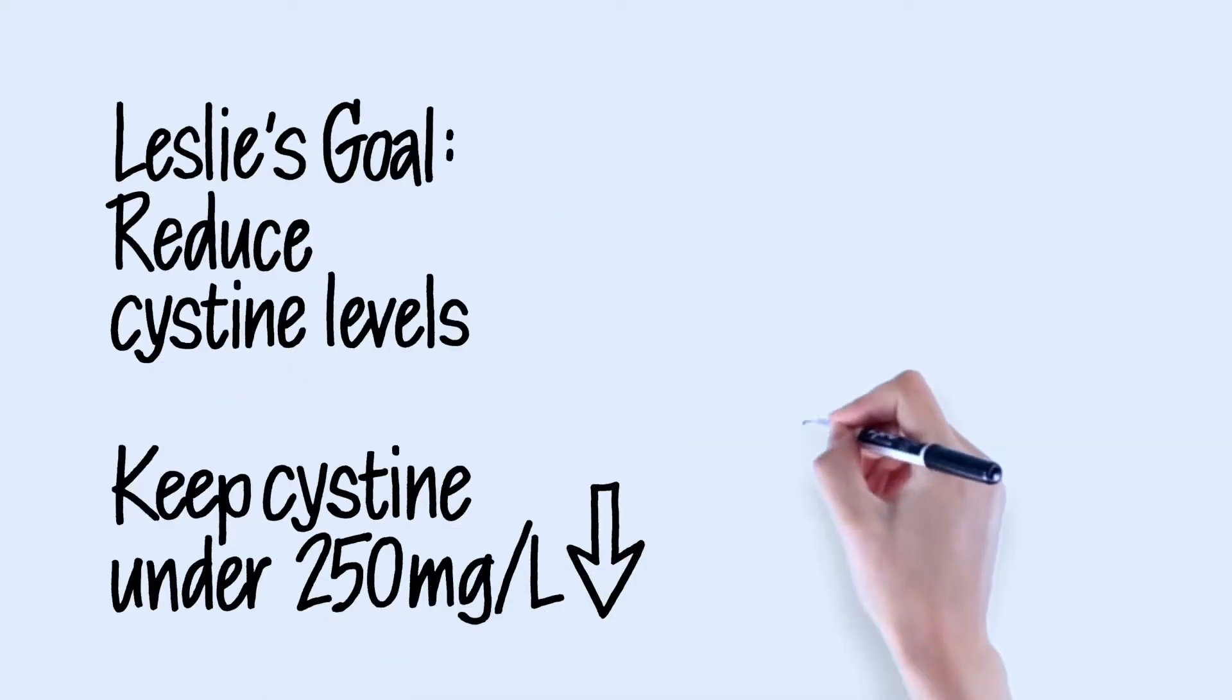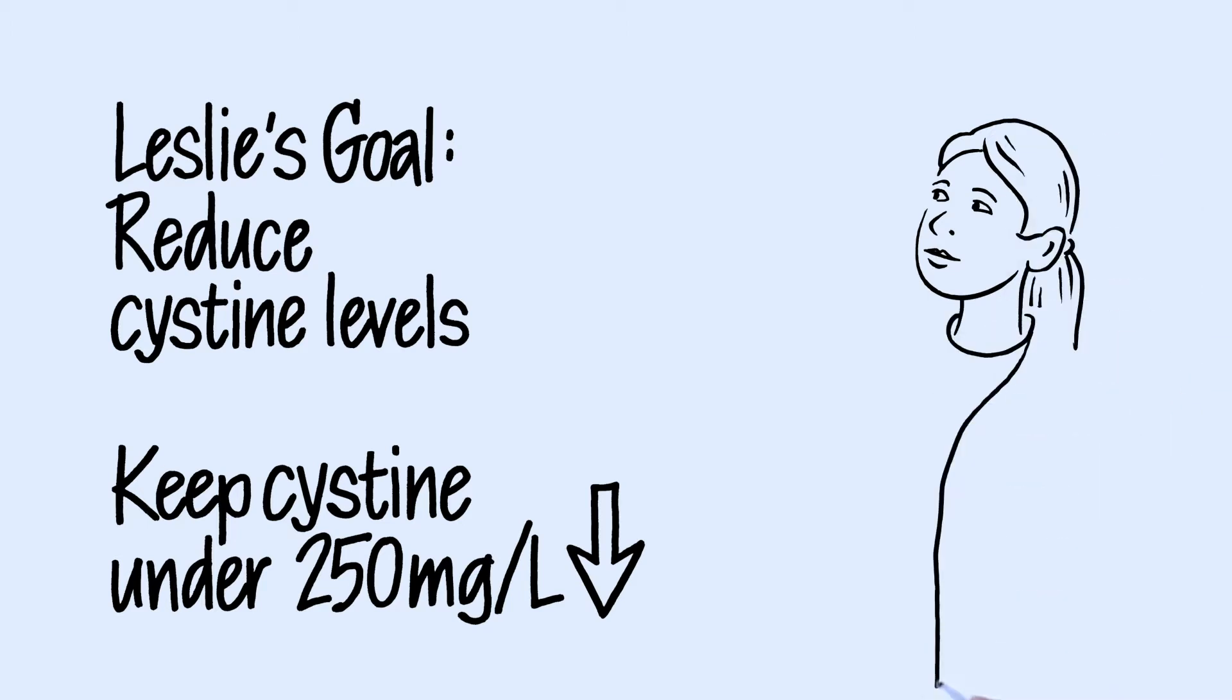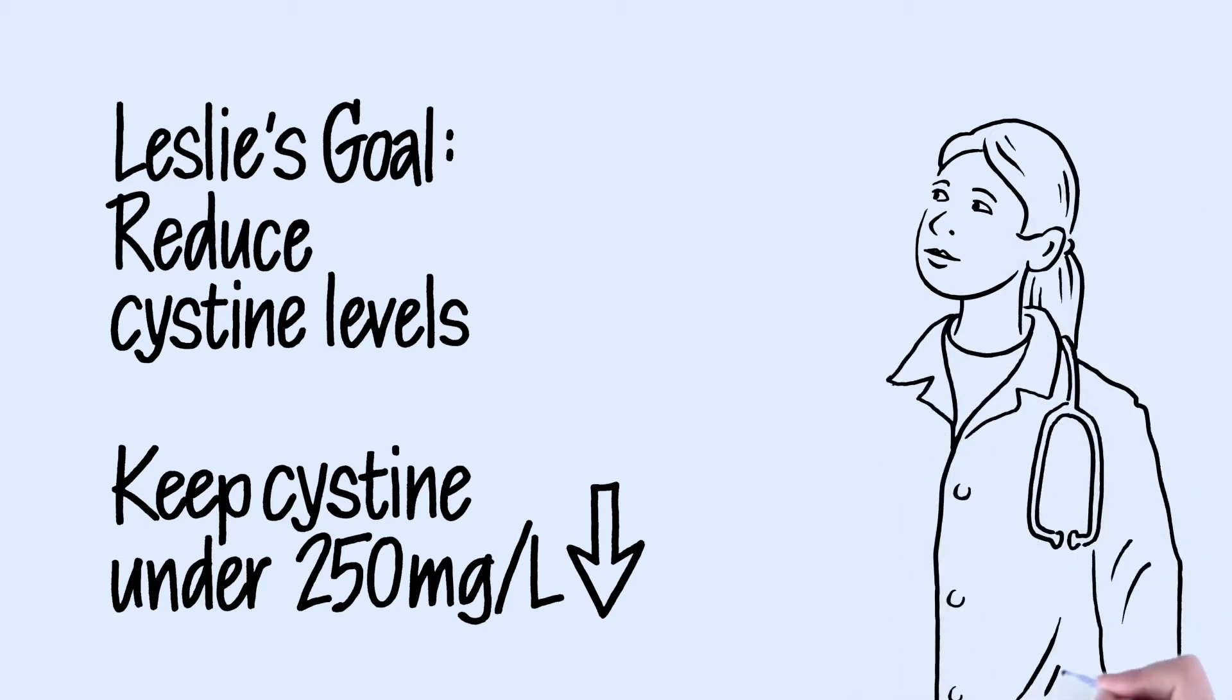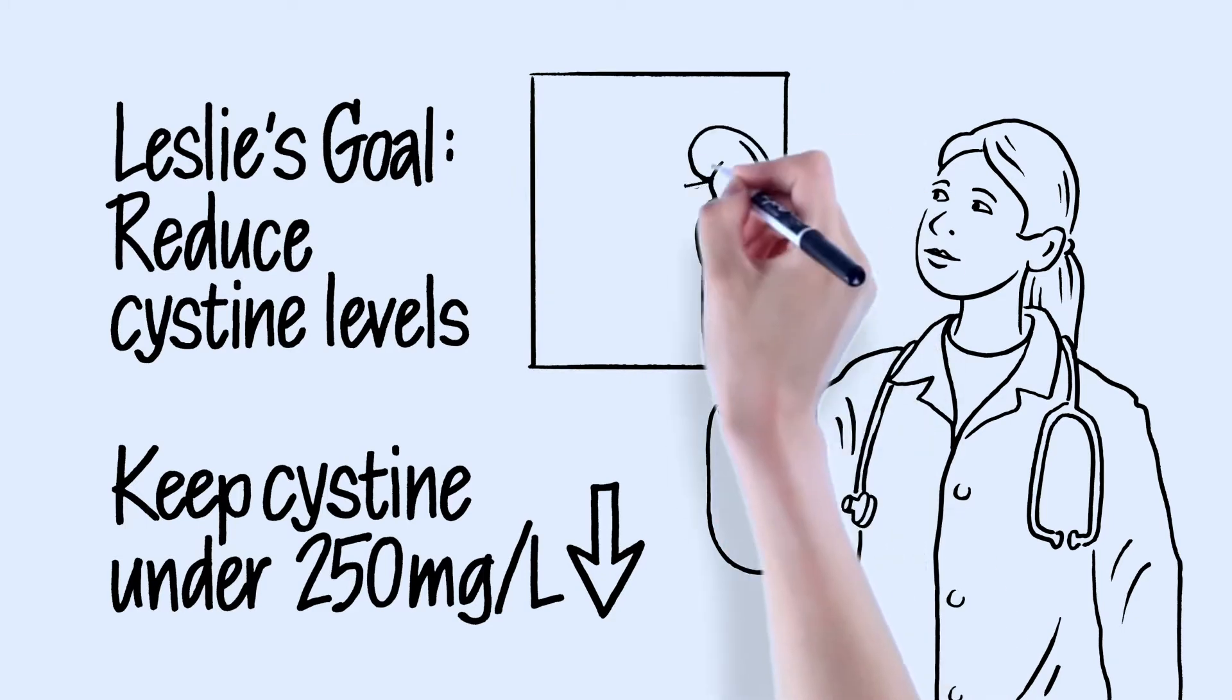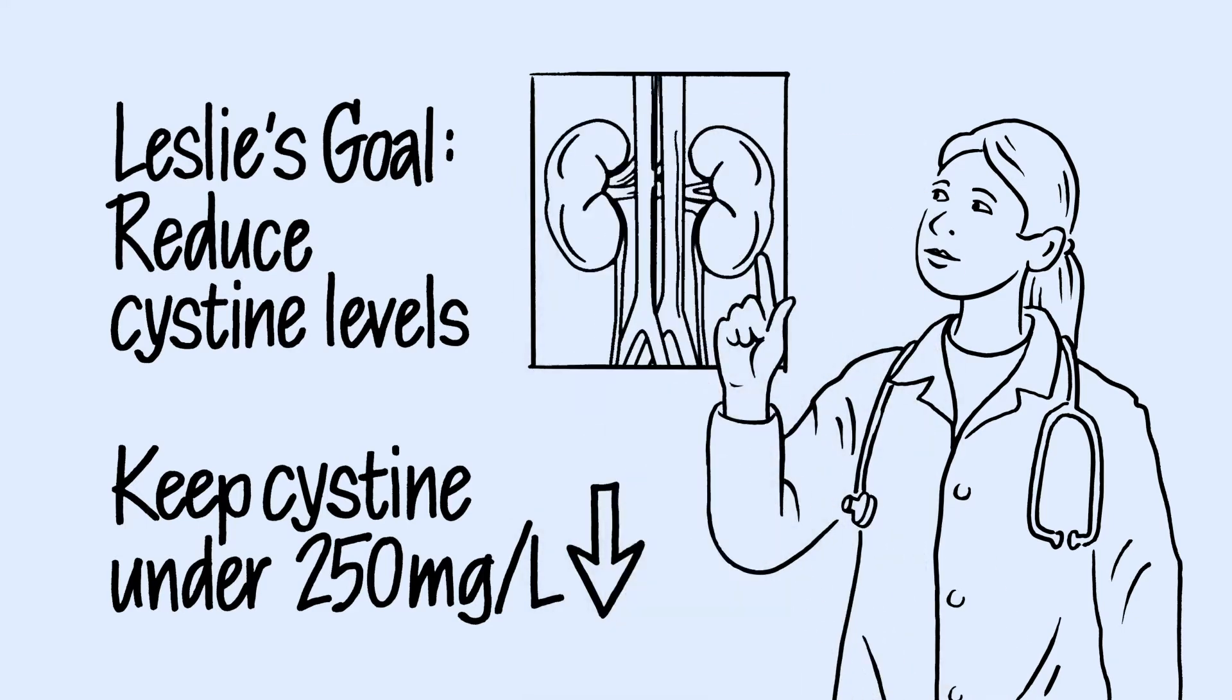At her appointment, Leslie's doctor explained their main goal is to reduce the level or concentration of cystine in her urine so stones won't form, generally under 250 milligrams per liter.